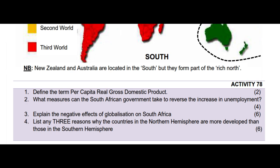As usual, we conclude with homework: Activity 78 on page 180. Question 1: Define the term 'per capita gross domestic product' — 2 marks. Question 2: What measures can the South African government take to reverse the increase in unemployment? — 4 marks. Question 3: Explain the negative effects of globalization on South Africa — 6 marks. Question 4: List any three reasons why countries in the northern hemisphere are more developed than those in the southern hemisphere — 6 marks.